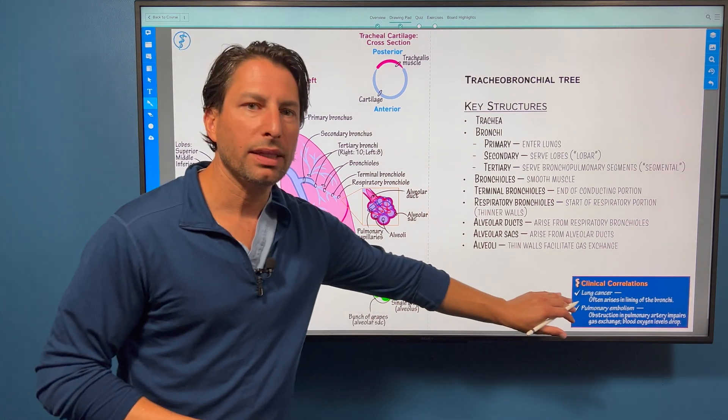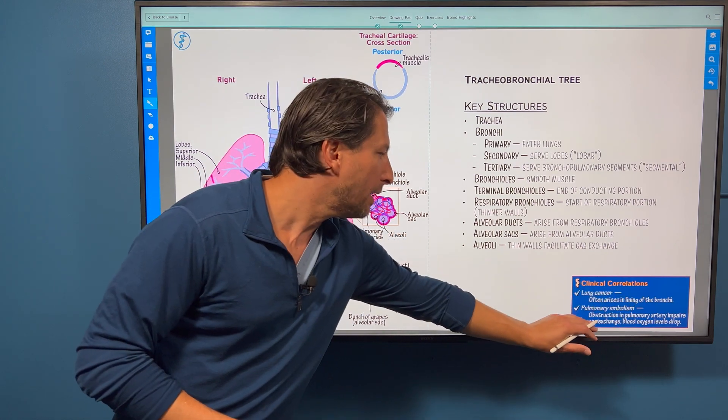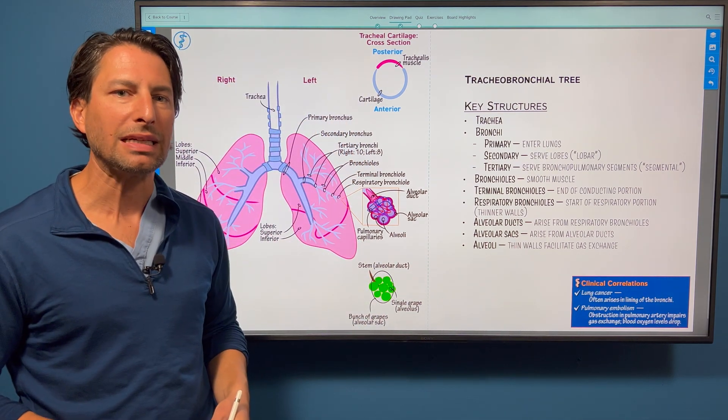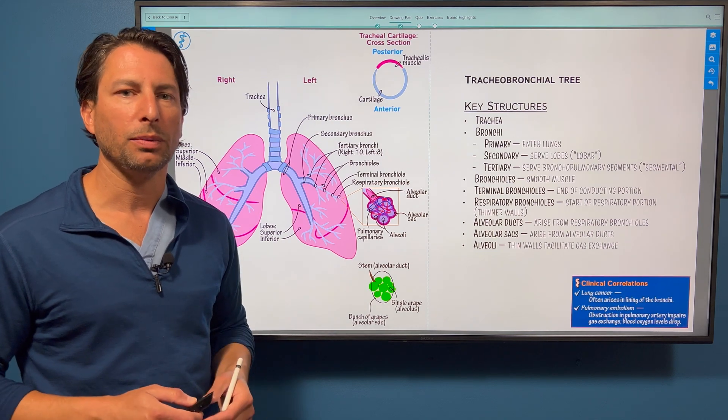Key clinical correlations: lung cancer often arises from lining of the bronchi. And then pulmonary embolism involves an obstruction of this pulmonary arterial tree. There's an inability to perform normal gas exchange.